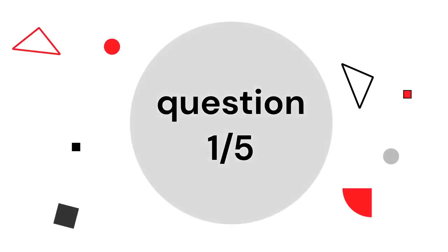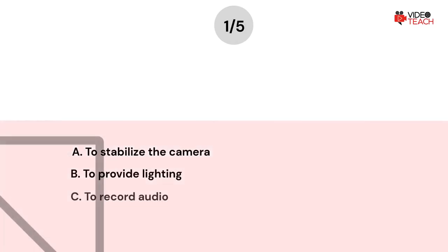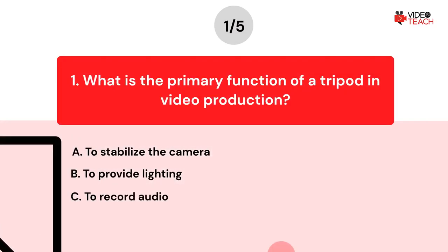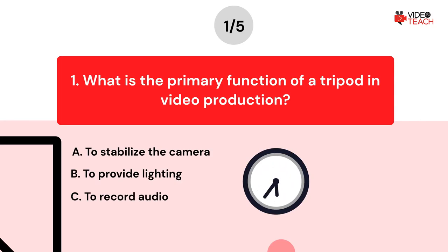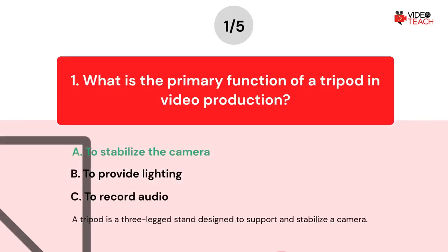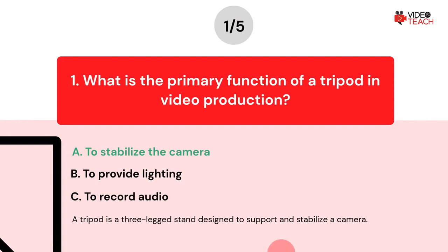Question number one. What is the primary function of a tripod in video production? Option A: To stabilize the camera. Option B: To provide lighting. Option C: To record audio. Now you have about 15 seconds to think about your answer. The correct answer is option A. A tripod is a three-legged stand designed to support and stabilize a camera.